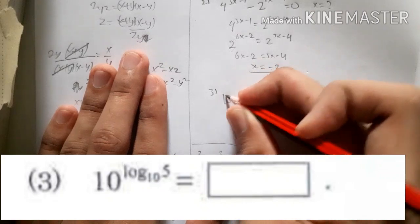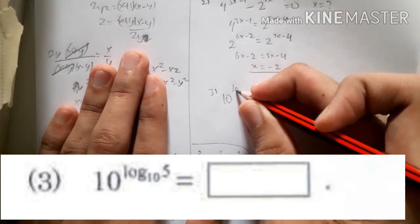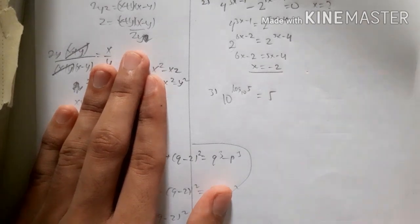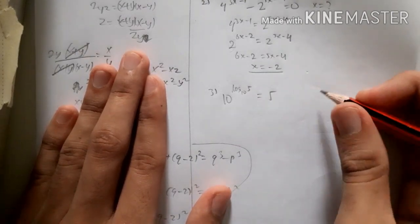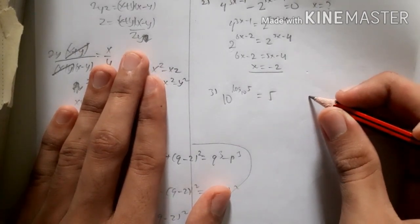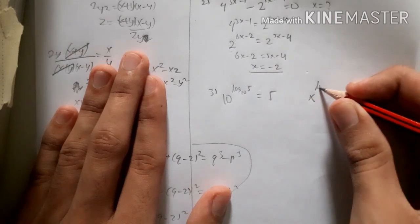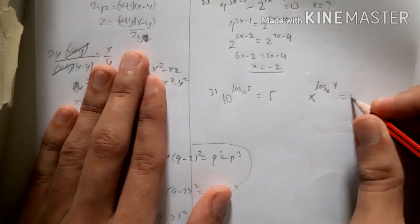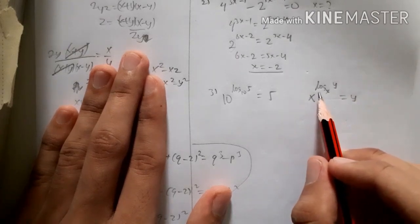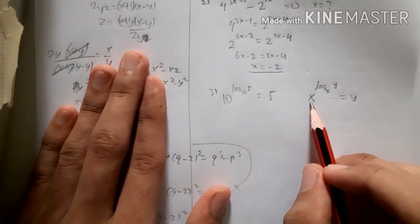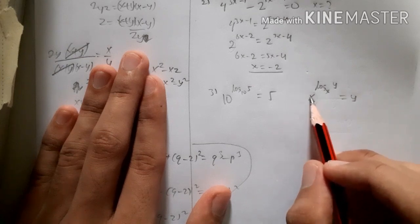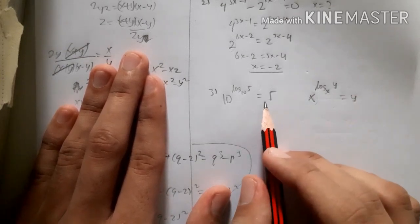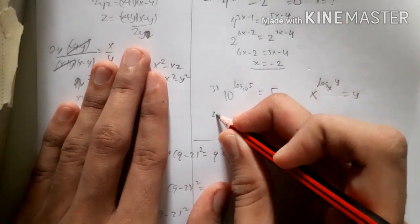Number 3: what is 10 to the power of log base 10 of 5? The answer is 5. This is the logarithm identity — if you have x to the power of log base x of y, the answer is y, provided that the base of the exponent matches the base of the logarithm. So number 3 is 5.